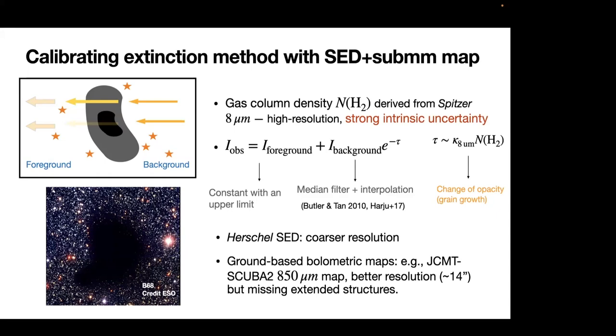I will briefly introduce the extinction method. Because it has this strong intrinsic uncertainties, we have to benchmark it using this combined sub-millimeter map. The figure in the upper panel shows the general picture when interstellar radiation field goes through a cold and dense core. If you look at the one component radiative transfer equation, we actually have three components. We have a foreground emission, a background emission, and the background emission is attenuated by this cold and dense core so that it becomes dimmer.